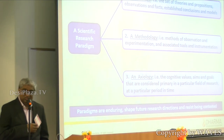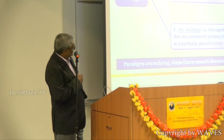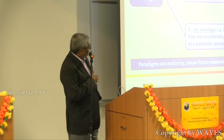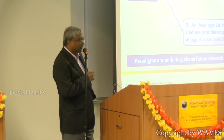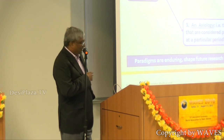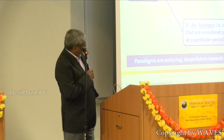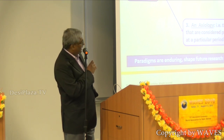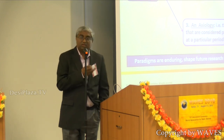The second is a methodology — that is, how you do research in a particular area: methods of observation, experimentation, associated tools and instruments by which you gather data to support a theory. And the third is an axiology, which is the source of the cognitive values, the aims and goals that are considered primary in a particular field of research.